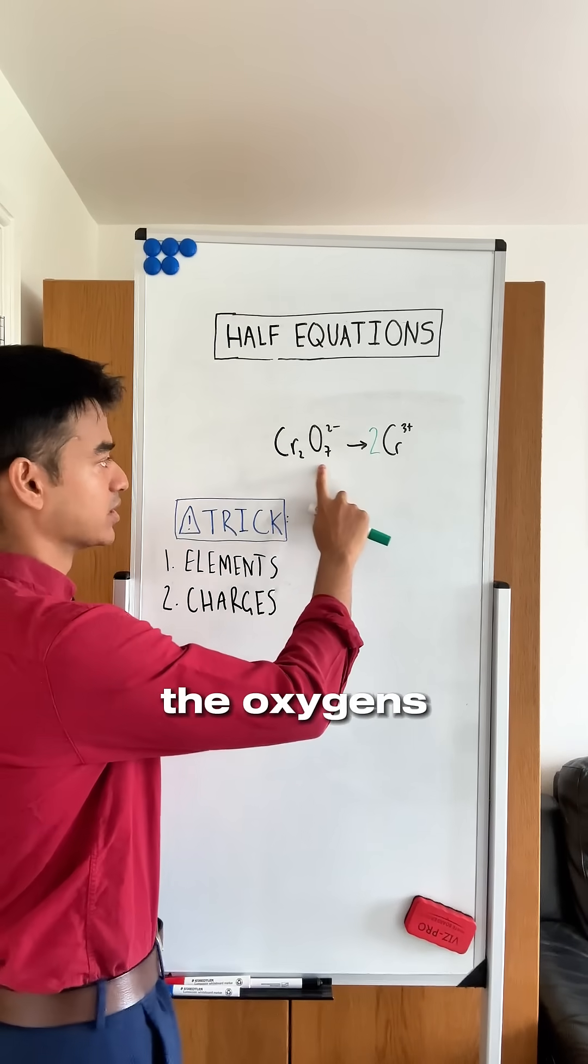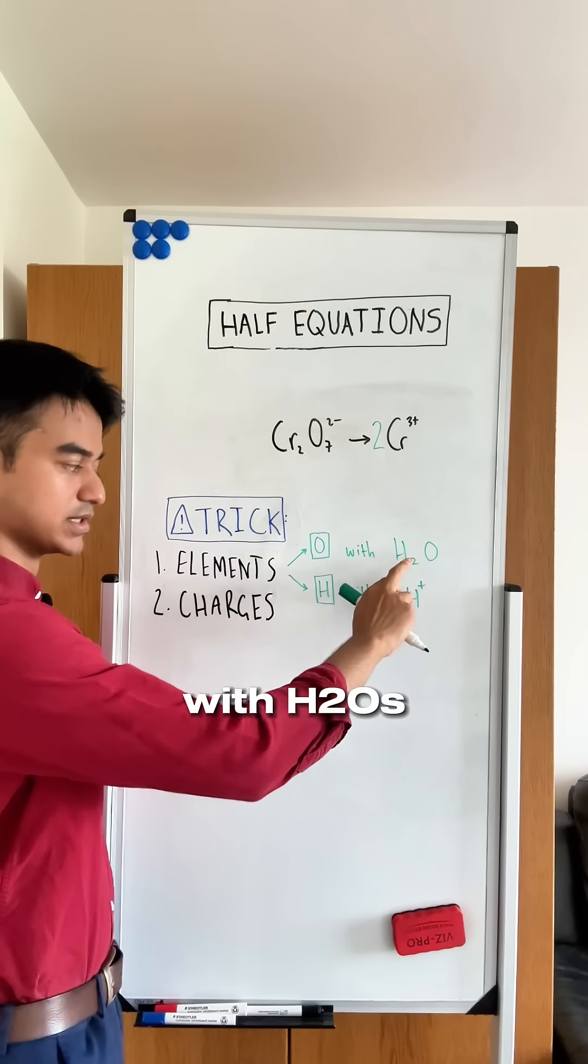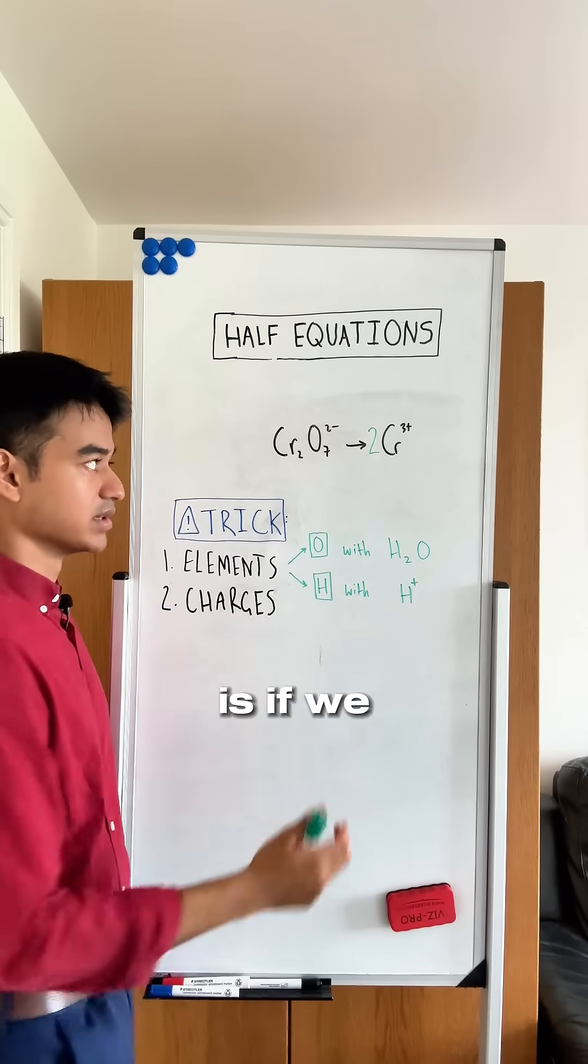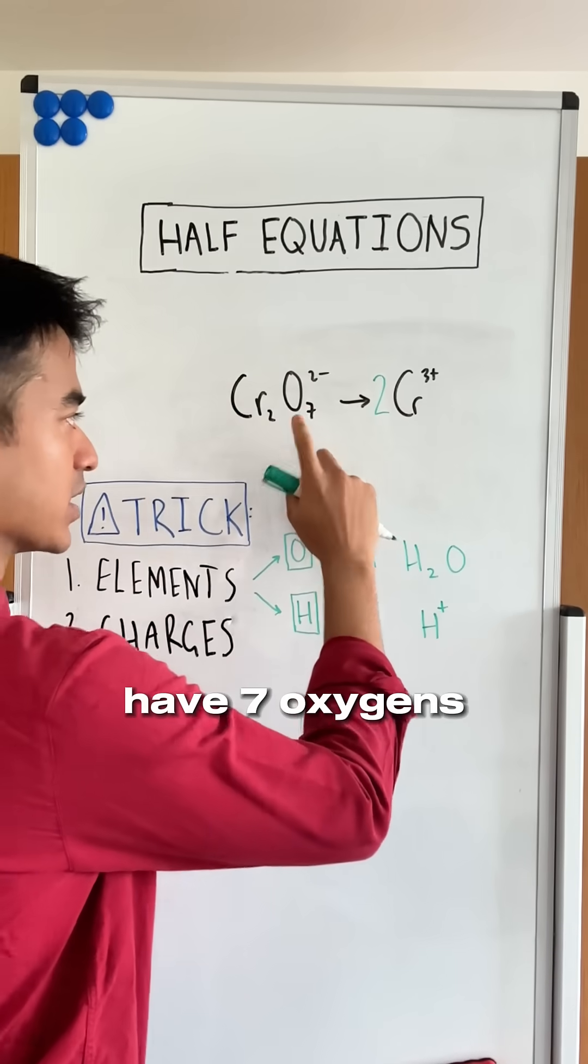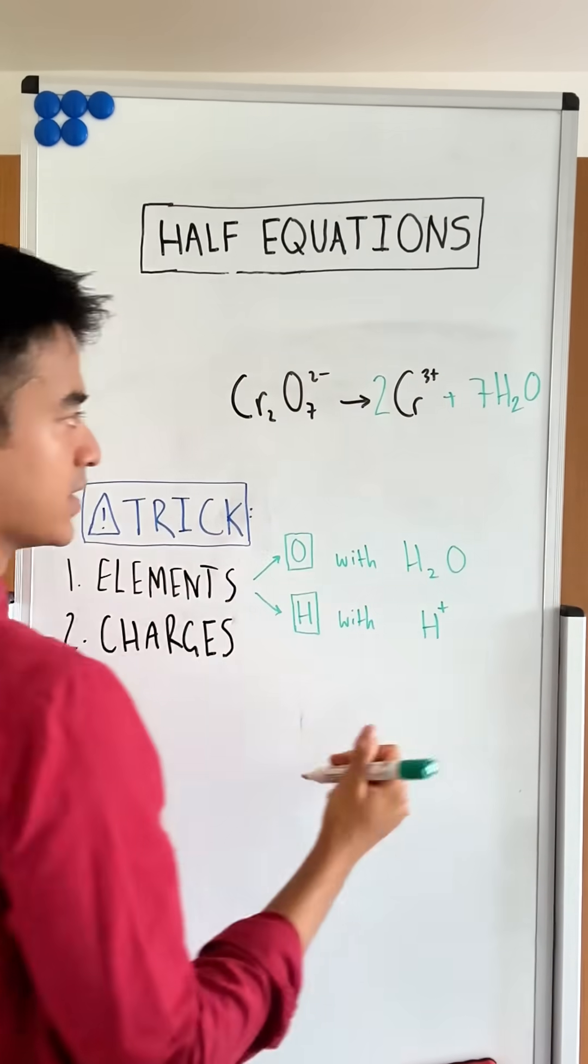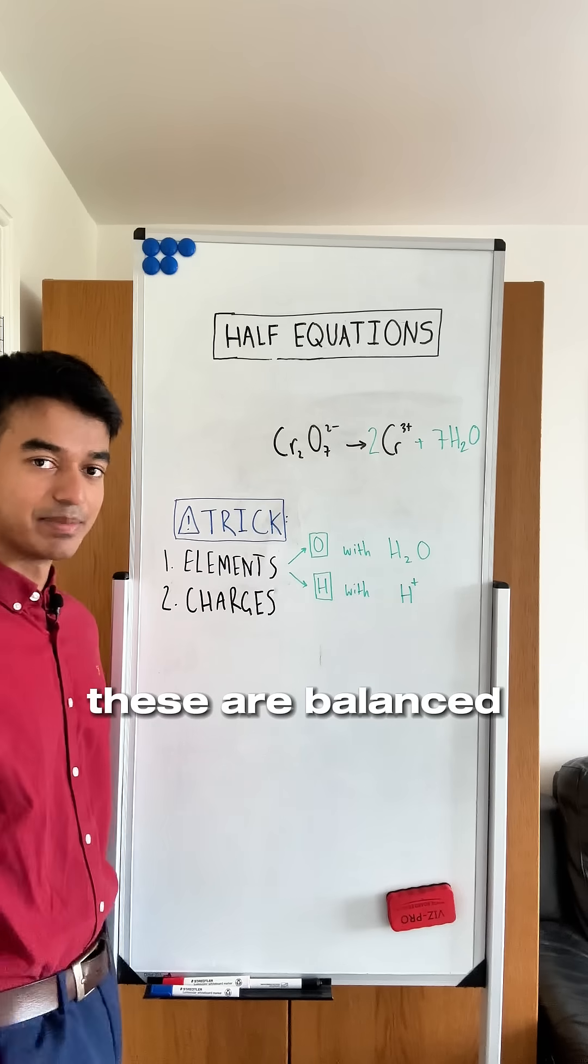The next step is to balance the oxygens. In half equations, the way to balance oxygens is with waters, and the way to balance hydrogens is with protons. What I mean is, if we have 7 oxygens here, I need to have 7 waters here. Now there's 7 oxygens, 7 oxygens. These are balanced.